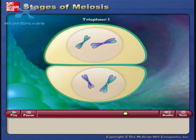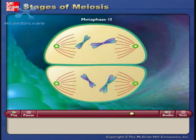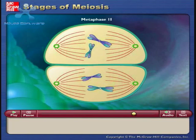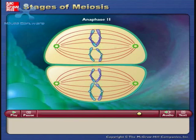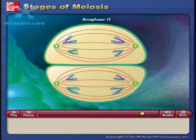During prophase II, the nuclear envelope breaks down and a new spindle forms. In metaphase II, spindle fibers bind to both sides of the centromeres. During anaphase II, the spindle fibers contract and the sister chromatids move toward opposite poles.